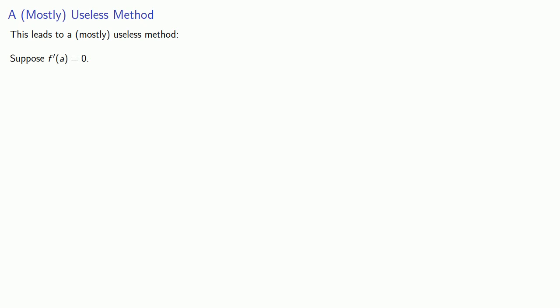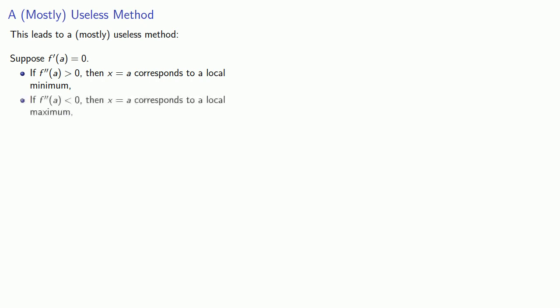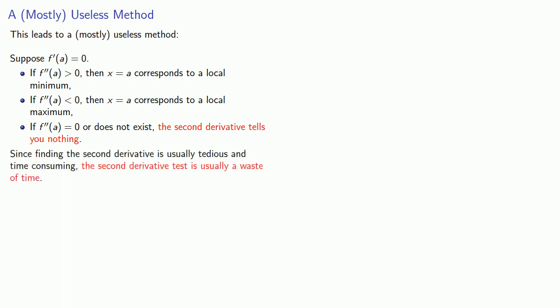This leads to the following mostly useless method. Suppose the derivative is actually zero at some point. If the second derivative is positive, then x equals a corresponds to a local minimum value. If the second derivative is negative, then x equals a corresponds to a local maximum value. And here's the most important thing to remember: if the second derivative is zero or does not exist, the second derivative tells us absolutely nothing. Since finding the second derivative is usually tedious and time-consuming, the second derivative test is usually a waste of time.